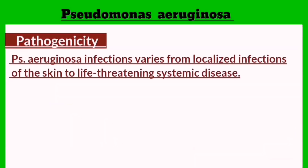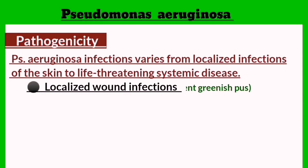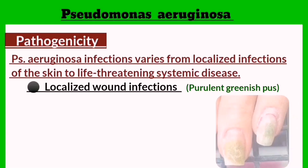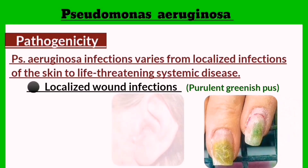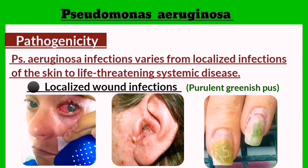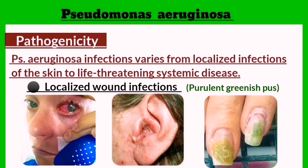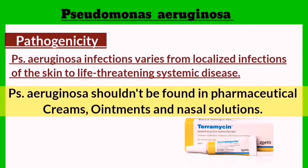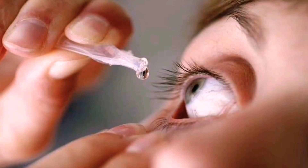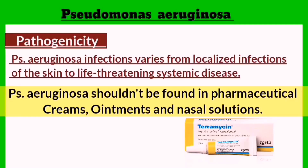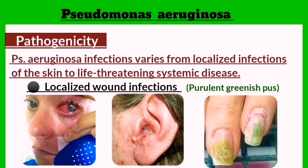Infections caused by Pseudomonas aeruginosa are usually superficial, often affecting wounds which can develop a purulent greenish pus around skin, nails or the outer ear. People who frequently wear contact lenses are at particular risk of infections to the eyes, which can lead to more serious partial blindness. These organisms grow particularly well on skin and mucosal membranes, which makes it especially important that they are not found in any topical medicines such as creams, ointments or nasal solutions.